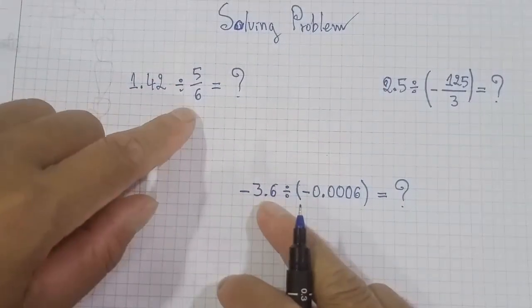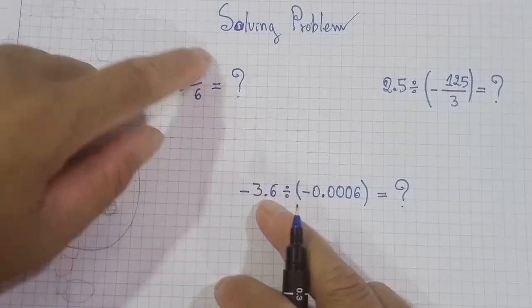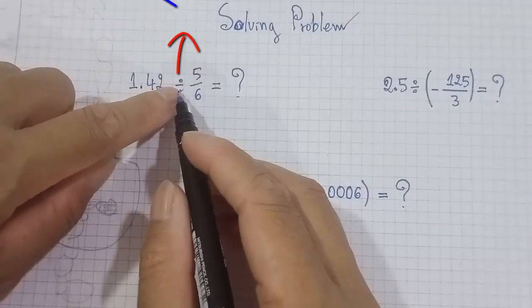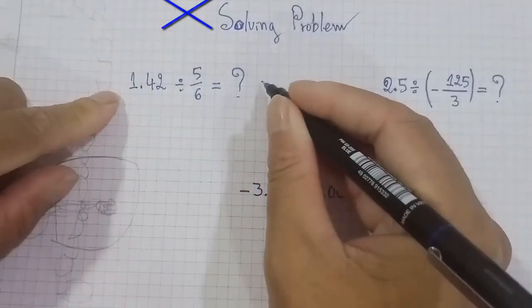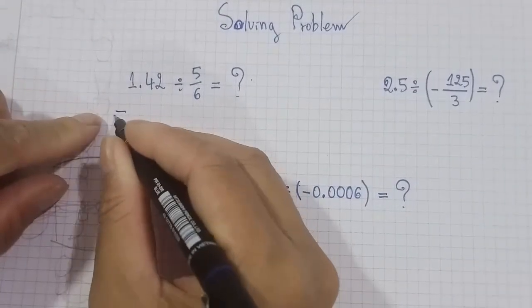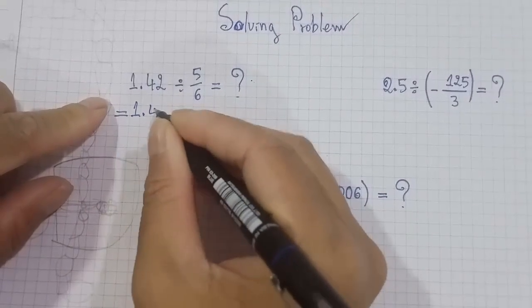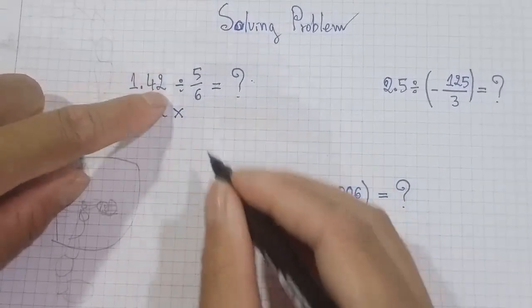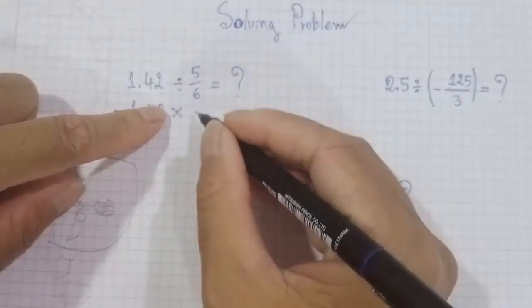So you can change divided by to multiply. When you see a formula like this, you can change divided by to multiply. You can see here, equal, 1.42 divided by, we change to multiply, multiply like this, and 6 up and 5 down.